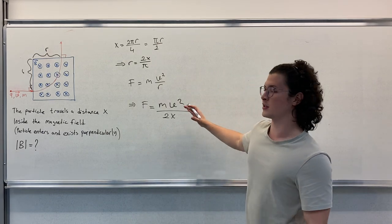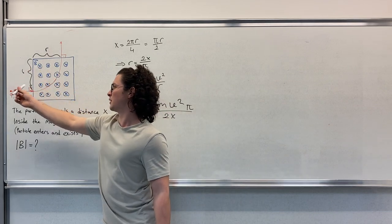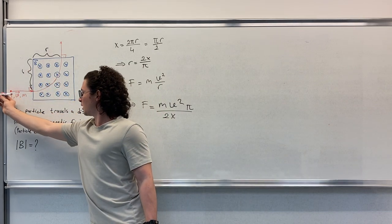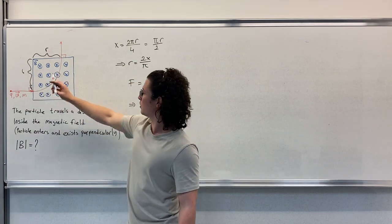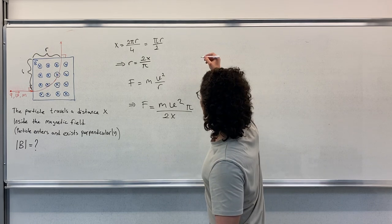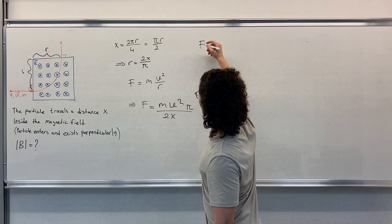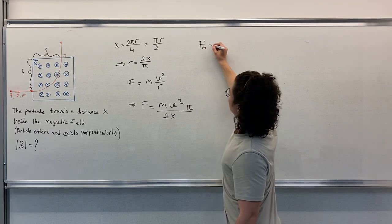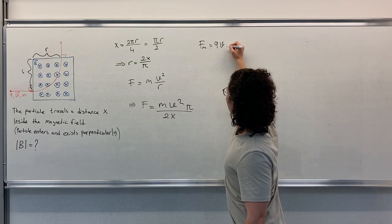But what causes this force is actually this magnetic field. A moving charge enters this magnetic field, so there's a force applied. That force, let's call it F magnetic, is equal to q v cross B.